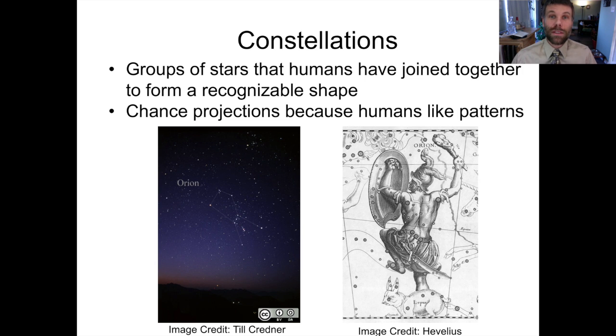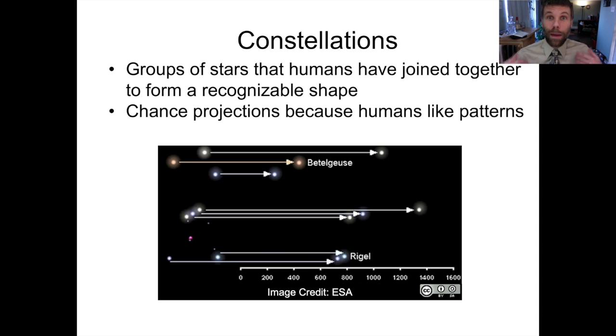So constellations did, for thousands of years, serve a very important purpose. One thing that's important to remember is that these are near-chance projections. If I take those seven bright stars that make up the constellation Orion and map them out, I find that the stars are not even remotely associated with one another. They are at widely varying distances from a few hundred to over a thousand light-years from the Earth. And therefore...